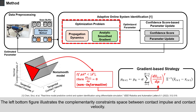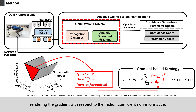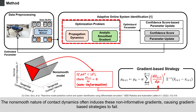The left-bottom figure illustrates the complementarity constraints space between contact impulse and contact velocity. As shown in the red area, when the contact impulse is not attached to the friction cone, the dynamics does not depend on the friction coefficient, rendering the gradient with respect to the friction coefficient non-informative. The non-smooth nature of contact dynamics often induces these non-informative gradients, causing gradient-based strategies to fail.